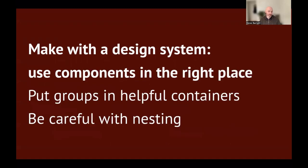Another thing when making with a design system is to use components in the right place — putting things in helpful containers. If we've got a couple of radio buttons, we might want to put them in a container that gives context for that choice, like a fieldset and legend in HTML, or ARIA attributes to say here's the context and here are the radios. We also want to be careful with nesting. If we have a card component that's a link wrapping a block, and then we put a button inside it, we've got an interactive element inside another interactive element. This is confusing for humans and for the technology delivering the page, so we want to avoid it.